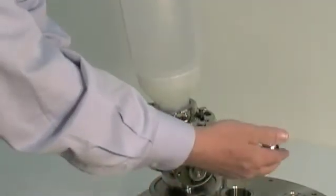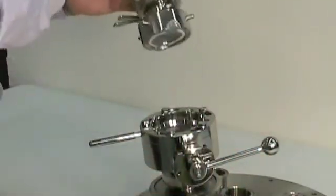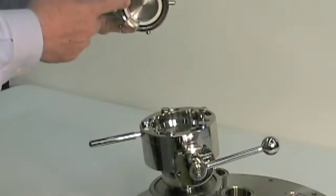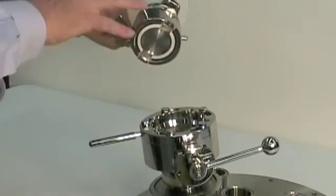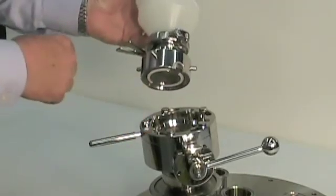At this point, this valve cannot be opened because you're locking it here. You can now remove this and you see the split side of the valve is here. Therefore, you've charged the reactor and done that under total containment.